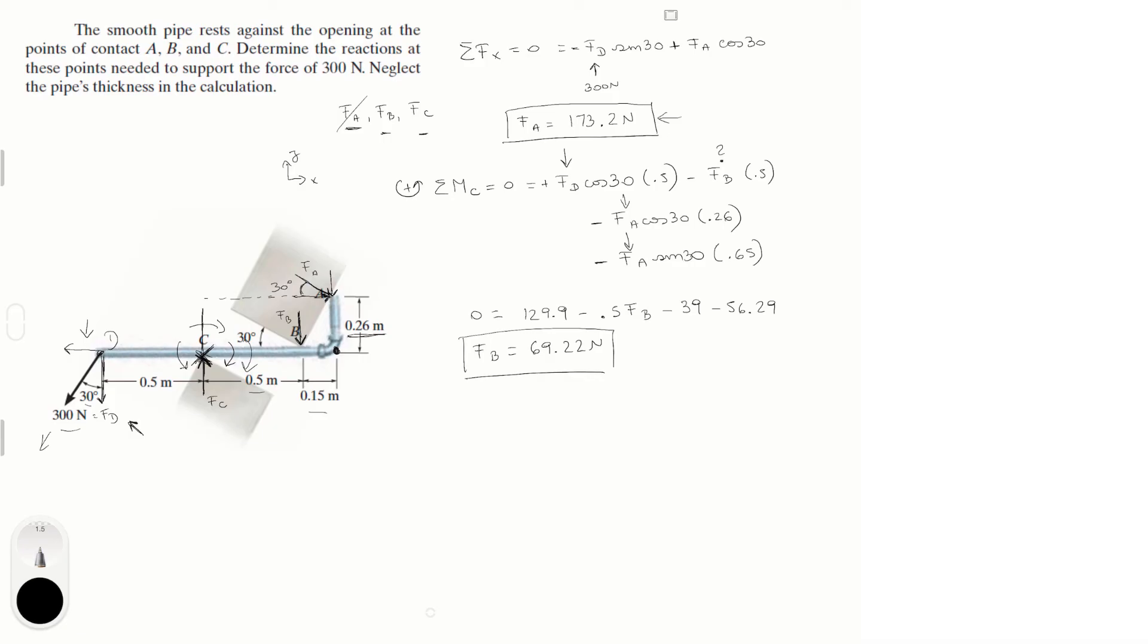Okay so now that we have F of A and F of B we can do the very easy equation of sum of the forces in the y is equal to 0. So what do we have in the y? We have the y component of F of D which is minus F of D cosine of 30 plus F of C minus F of B minus the y component of F of A. We know F of D which is 300 newtons, F of B we just found out to be 69.22 and F of A we found out to be 173.2. So we plug those numbers in and we solve for F of C and you should get that the answer is equal to 415.63 newtons.